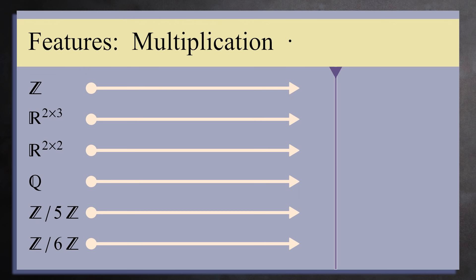The next feature we'd like to include is multiplication. You can multiply any 2 integers or rational numbers together. You can also multiply any 2 numbers mod n for any n. That leaves the 2 sets of matrices. You can multiply 2 square matrices but you cannot multiply 2 by 3 matrices by each other. Their dimensions are incompatible for multiplication. So only 5 of the 6 sets advance to the next round of commutative groups with multiplication.